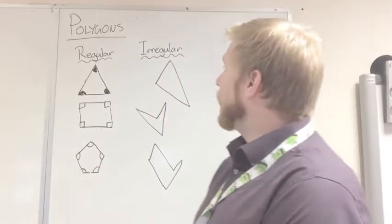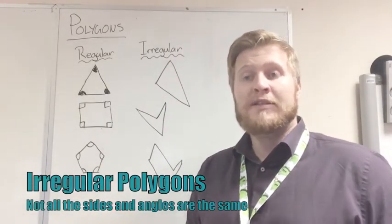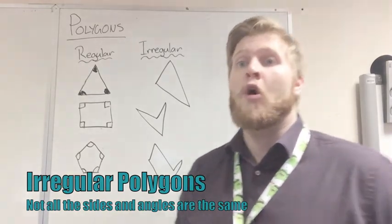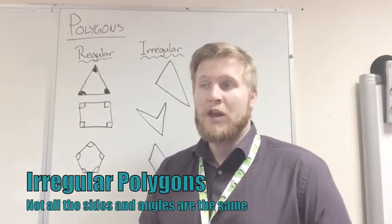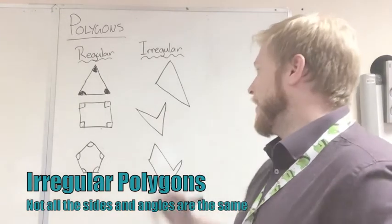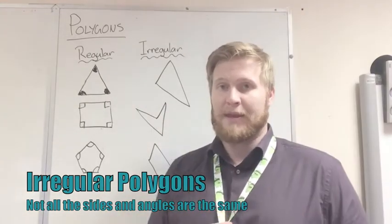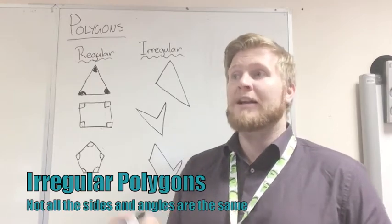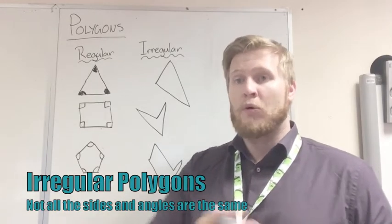So an irregular polygon is simply a polygon where the sides aren't the same length or the angles aren't, or both. So you can have one where the sides are the same length but the angles are different. You can have one where the angles are the same but the sides are different lengths. You can have one where the angles and the sides are both different.